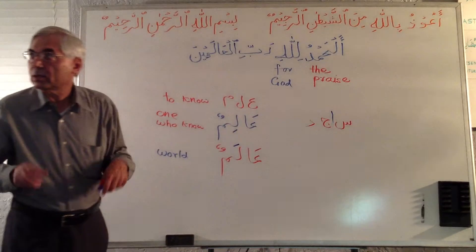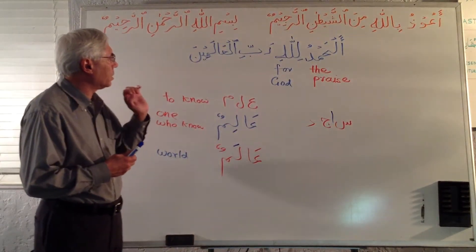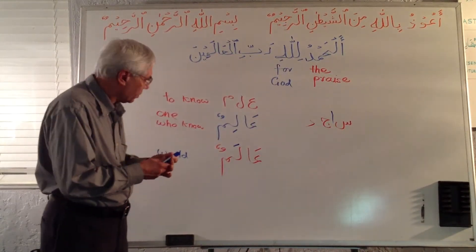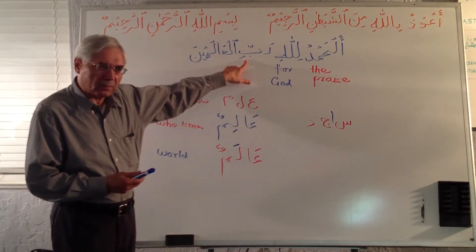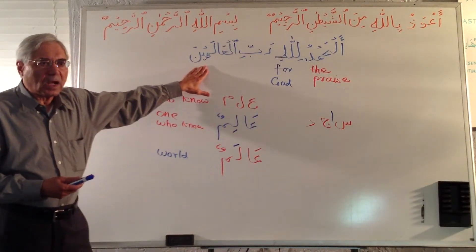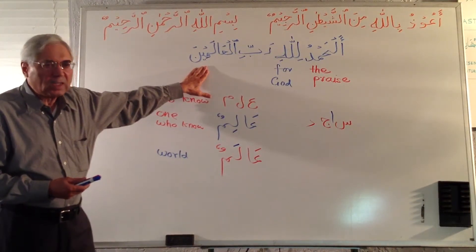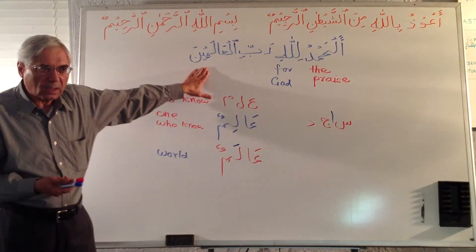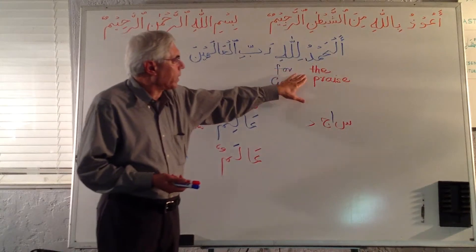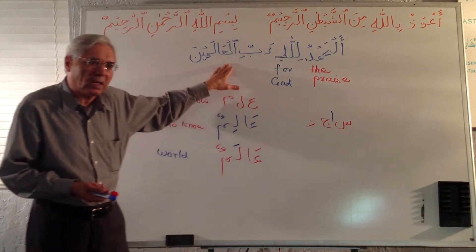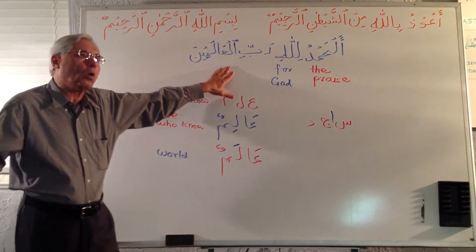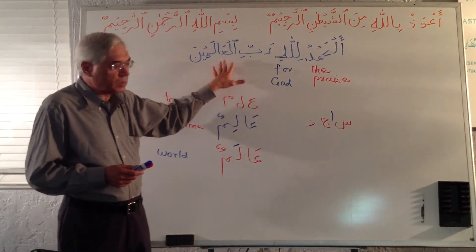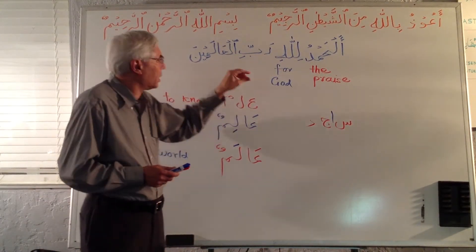We'll go into more detail in the next class, but I just want to give one point here. When we take the word Rabbun meaning 'sustainer' and the word Alamin meaning 'worlds,' together it is 'sustainer of the worlds.' So all the praise is for Allah who is the sustainer and provider of all the worlds, all the universes — all the Alamin.